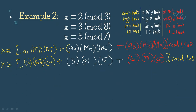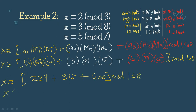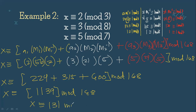Now let's simplify. x ≡ (2 × 56 × 2) + (3 × 21 × 5) + (5 × 24 × 5) = 224 + 315 + 600 = 1139 (mod 168). Dividing 1139 by 168 gives a remainder of 131. So x ≡ 131 (mod 168), and the value of x is 131.